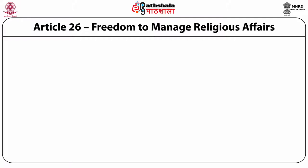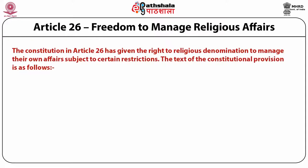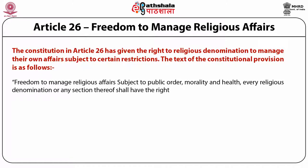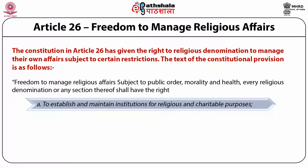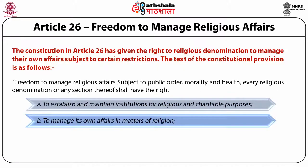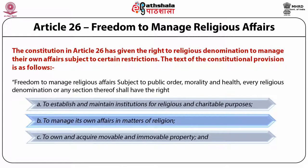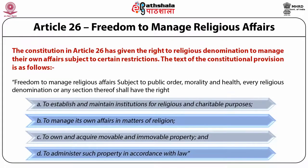Now let us move to the cases on Article 26 — the freedom to manage religious affairs. The Constitution in Article 26 has given the right to religious denominations to manage their own affairs subject to certain restrictions. Article 26 reads: freedom to manage religious affairs subject to public order, morality and health — every religious denomination or any section thereof shall have the right to establish and maintain institutions for religious and charitable purposes, to manage its own affairs in matters of religion, to own and acquire movable and immovable property, and to administer such property in accordance with law.